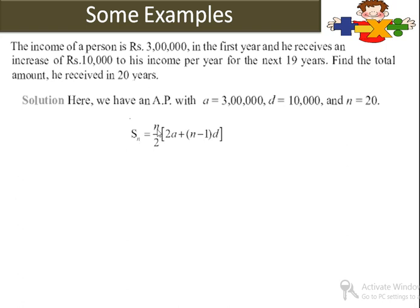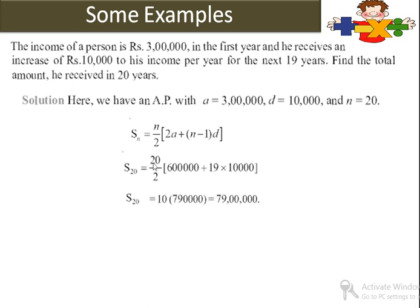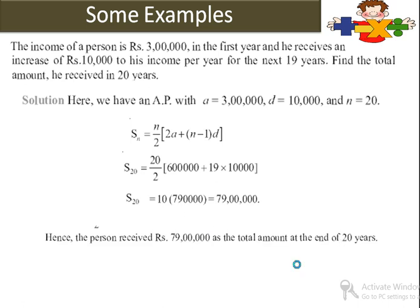SN equals N upon 2 into (2A plus (N minus 1) into D). S20 equals 20 upon 2 into (2 into 3 lakh plus 19 into 10,000). That is 10 into (6 lakh plus 1 lakh 90,000) = 10 into 7 lakh 90,000 equals 79 lakh rupees. He will earn 79 lakh rupees in 20 years — this is his total income in 20 years.